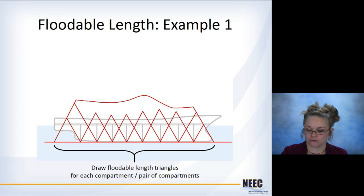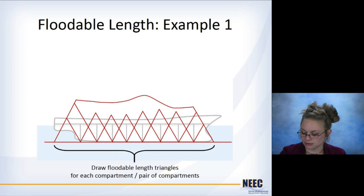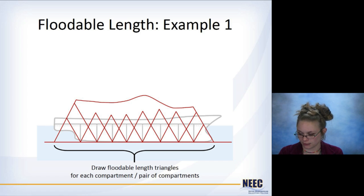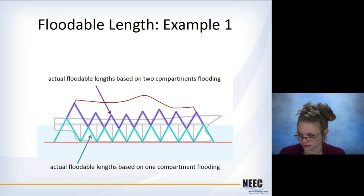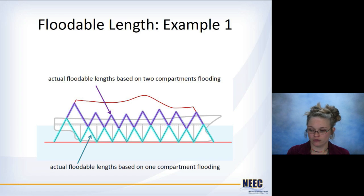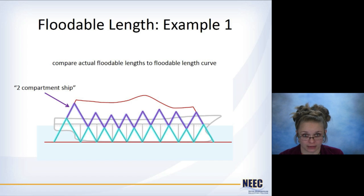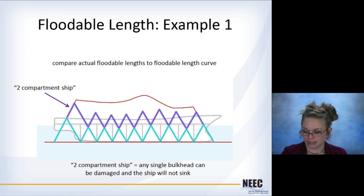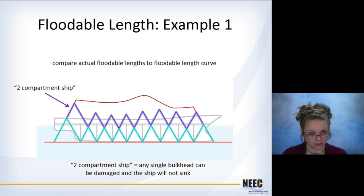This diagram can be confusing at first — look at it a few times — but what it really shows is the floodable lengths for each compartment, now no longer continuous like the original curve, because you've restricted flooding with your bulkheads. You draw the triangles for each compartment and each pair of compartments, then trace the actual floodable lengths for one-compartment flooding (the lower teal line) and for two-compartment flooding (the purple line). You compare those actual floodable lengths to the allowable floodable length, which is the red line. In this case, because the purple line is completely underneath the red line, this is a two-compartment ship — meaning any single bulkhead can be damaged and the ship will not sink. That's a good thing.